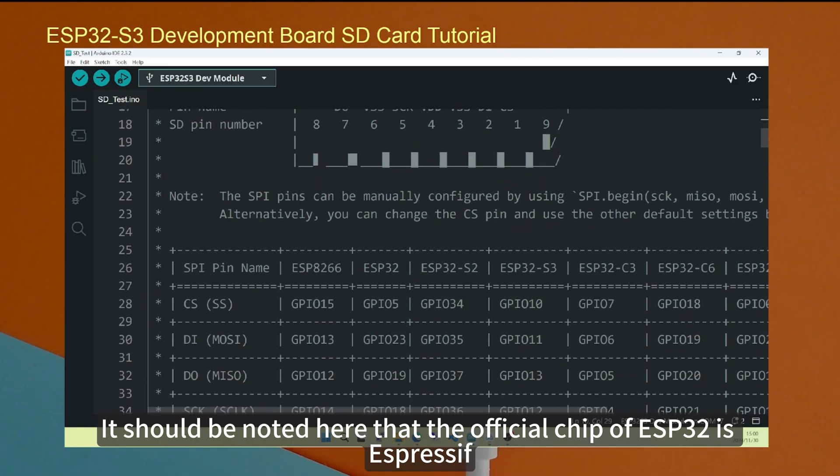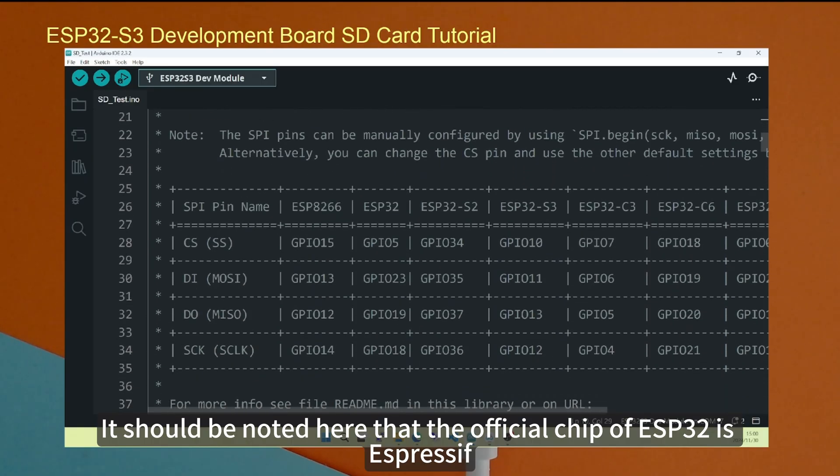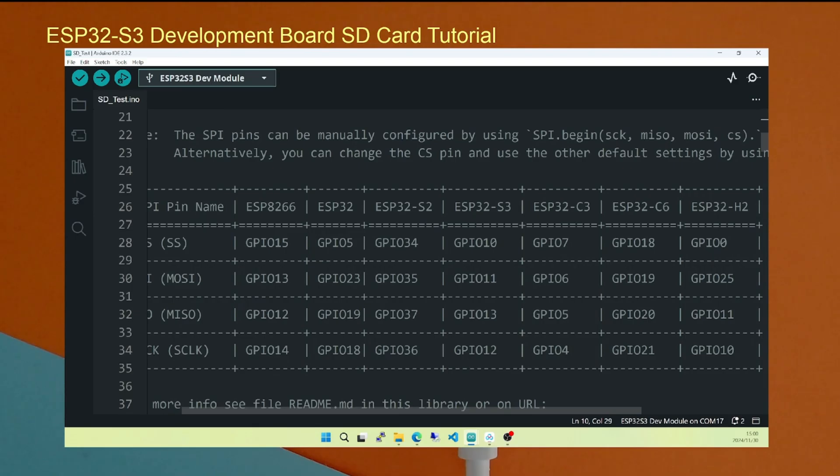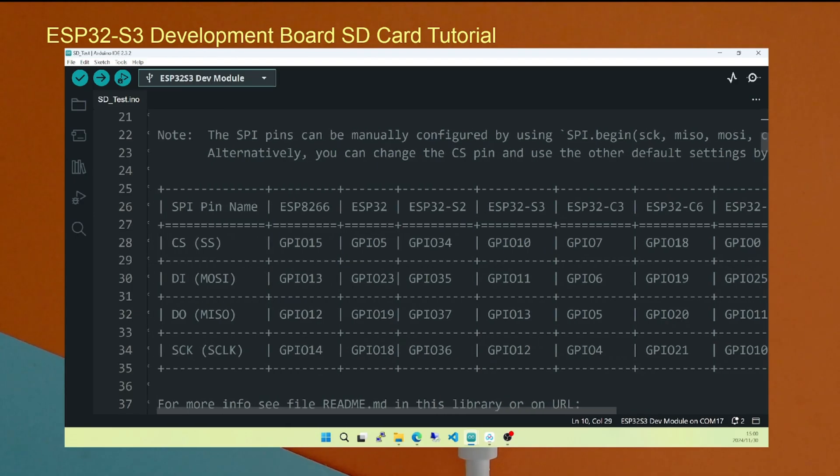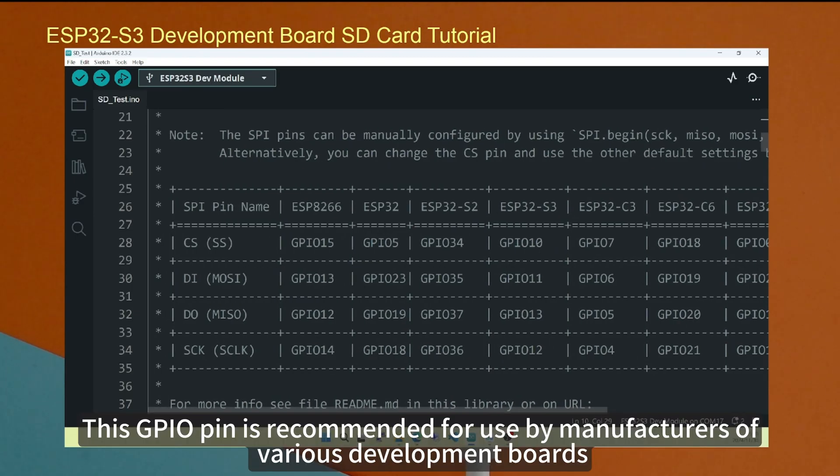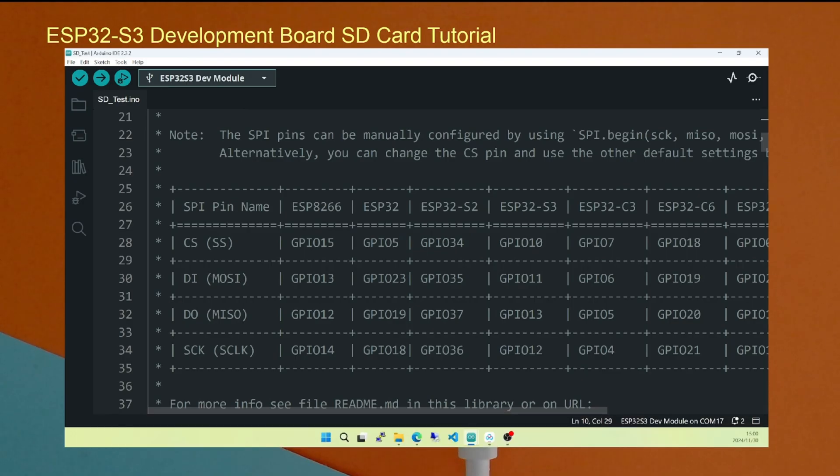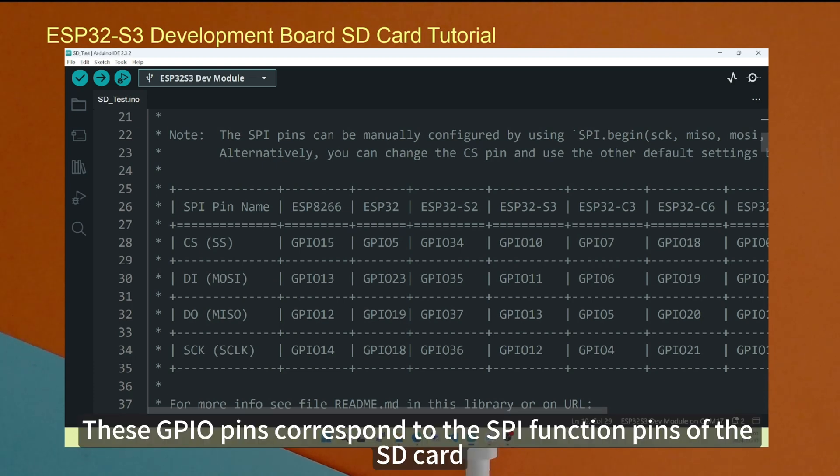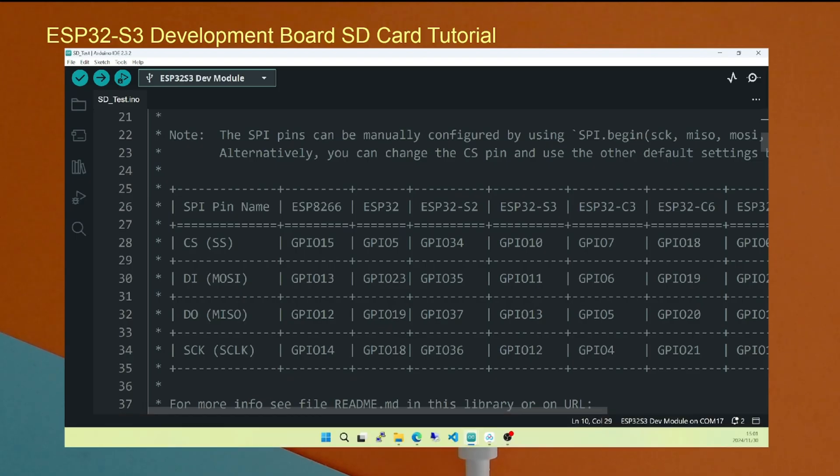It should be noted here that the official chip of ESP32 is expressive. The GPIO pins corresponding to different ESP chips have been given. This GPIO pin is recommended for use by manufacturers of various development boards. Generally speaking, manufacturers will not easily change GPIO pins. These GPIO pins correspond to the SPI function pins of the SD card.